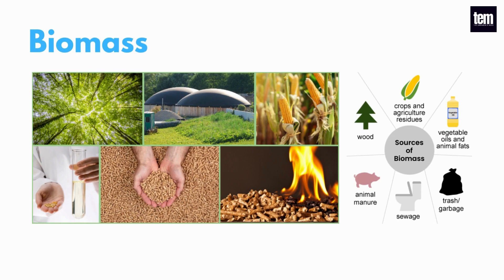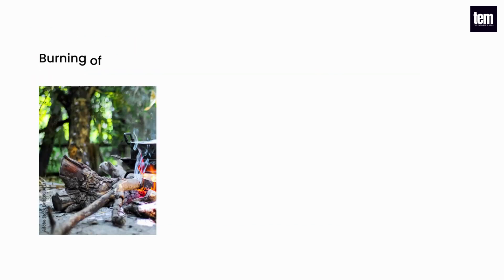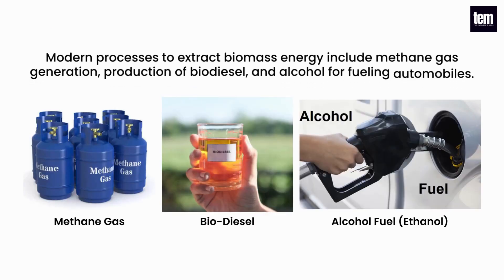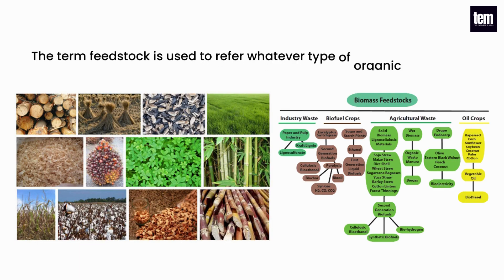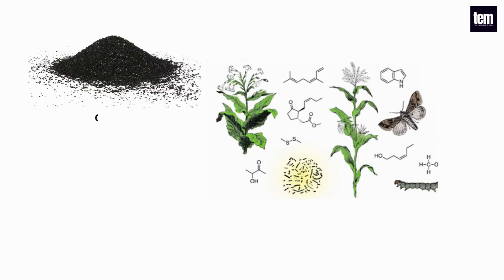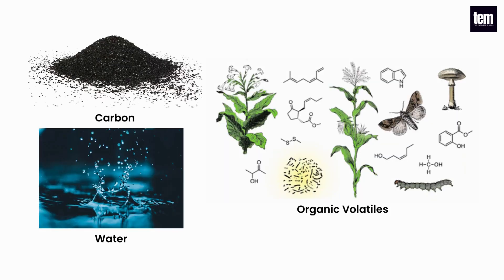Biomass energy, or bioenergy, is obtained from organic matter like living or recently living plants, animal remains, as well as biological waste. Burning of wood for cooking and warmth is the most common way to utilize biomass energy. Modern processes to extract biomass energy include methane gas generation, production of biodiesel, and alcohol for fueling automobiles. The term feedstock refers to whatever type of organic material or raw material will be used to produce energy. Different feedstocks have different physical compositions but generally all feedstocks include varying amounts of carbon, water, and organic volatiles for energy production.